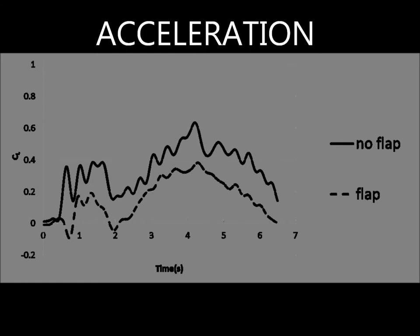We then compared the photos taken at different time intervals. Our first experiment was carried out with an accelerating plate. We measured the lift generated and plotted a graph that shows the coefficient of lift against time. The bolted line represents the plate without the flap, and the dotted line represents the plate with the flap. This means that the plate without the flap has higher lift as compared to the plate with the flap.